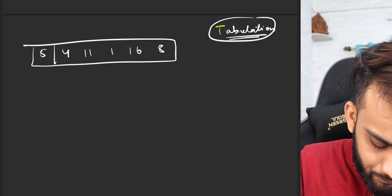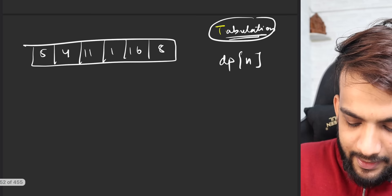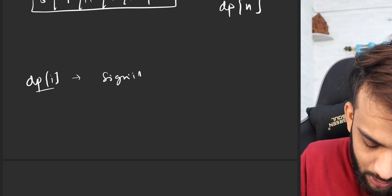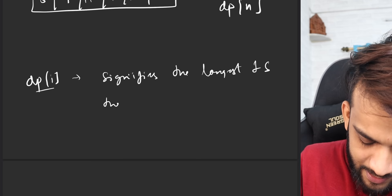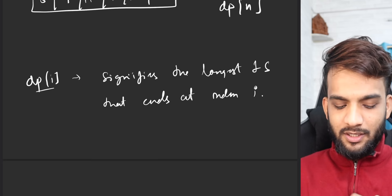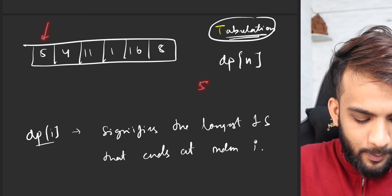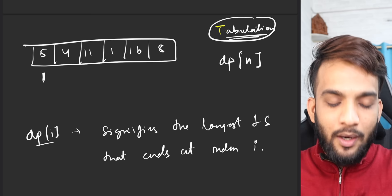Let's take the array [5, 4, 11, 1, 16, 8]. I'll declare a DP of size n, where dp[i] signifies the longest increasing subsequence that ends at index i. For example, what is the longest increasing subsequence that ends with 5? The length is 1, because before 5 we cannot have any element.